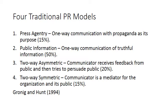Then there's public information, which is one-way communication of truthful information. For example, you might think of medical announcements — get your flu shot, get your flu vaccine, it helps you survive the flu. Two-way asymmetric consists of the communicator receiving feedback from the public and then trying to persuade the public. This describes very many traditional public relations plans — you go out, collect information, and then try to convince the public of your own ideas.